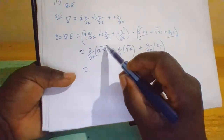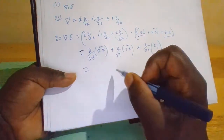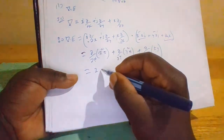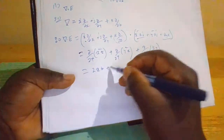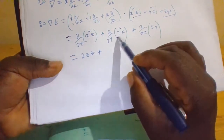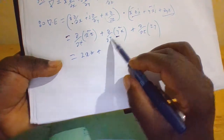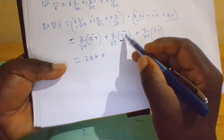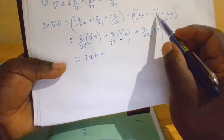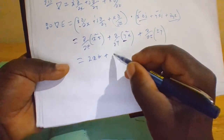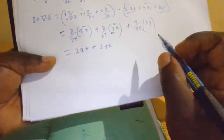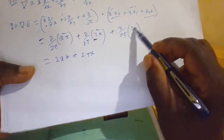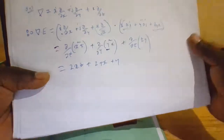This equals the partial derivative of (x²z) with respect to x, giving 2xz, plus the partial derivative of (y²x) with respect to y, giving 2yx, plus the partial derivative of (zy) with respect to z, giving y.